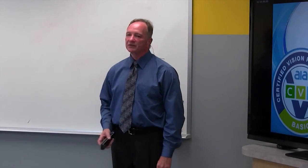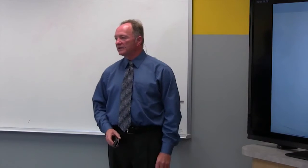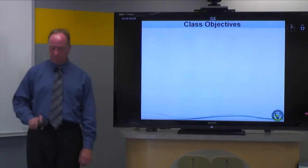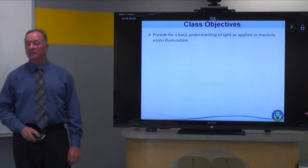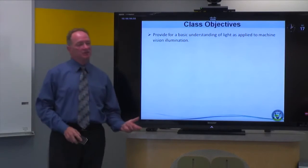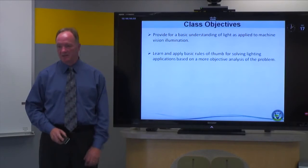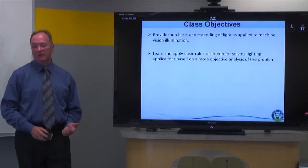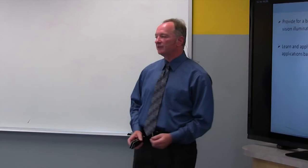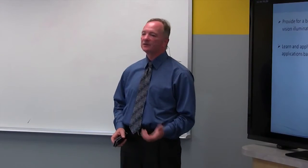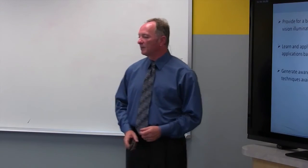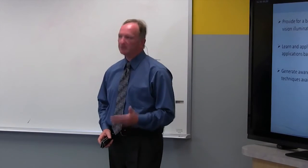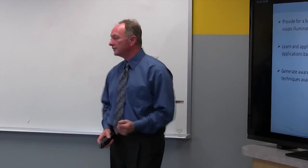So let's go ahead and get started. We have some class objectives. First, to provide a basic understanding of light as applied to machine vision illumination. We're also going to learn and apply basic rules of thumb for solving lighting applications based on a more objective analysis of the problem.